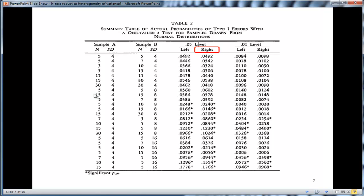The key thing to look at here is these are the results associated with the simulation with normal distributions. The main results are in this column here for .05 level on the right side.